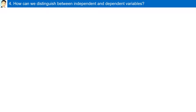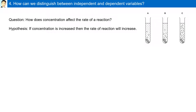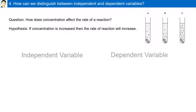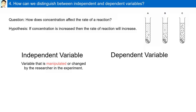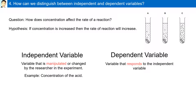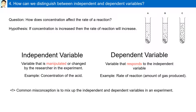How can we distinguish between independent and dependent variables? Answering the question of how concentration affects the rate of a reaction, the hypothesis proposed was: if concentration is increased, then the rate of reaction will increase. The independent variable is the one manipulated or changed by the researcher — in this case, the concentration of the acid. The dependent variable responds to the independent variable — in this example, it is the rate of reaction, or the amount of gas produced.